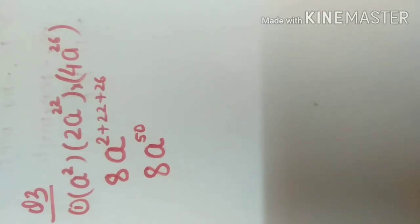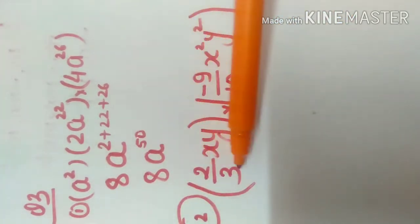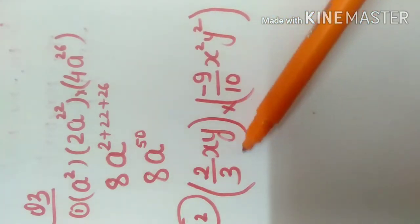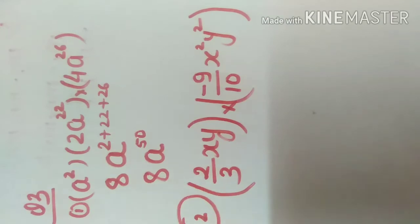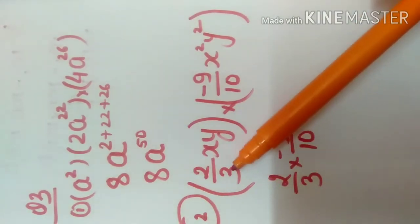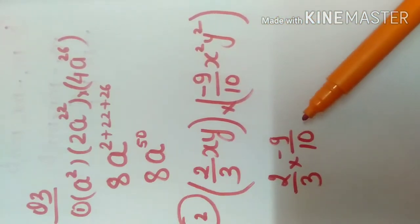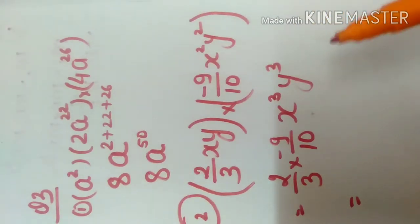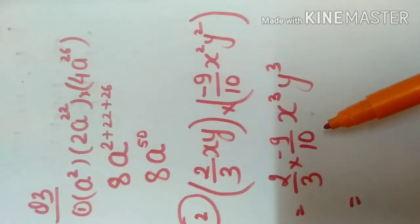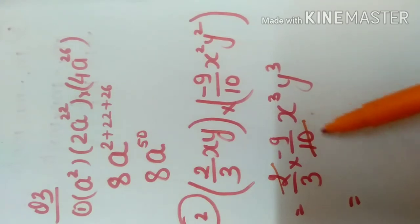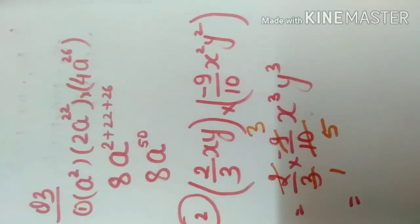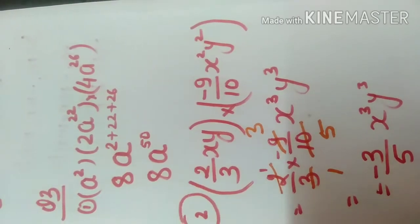Next: 2/3 xy multiplied to minus 9/10 x squared y squared. Constants are multiplied together and variables are multiplied separately. x into x squared is x cubed, and y into y squared is y cubed. Cancelling: 2 and 10 simplify, and 3 and 9 simplify, giving minus 3/5 x cubed y cubed.